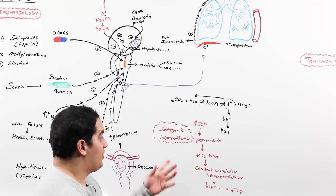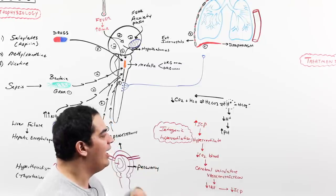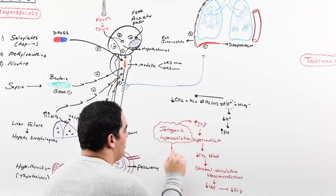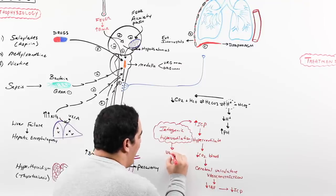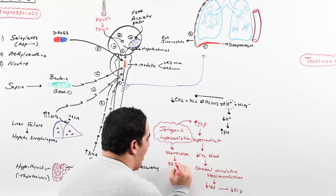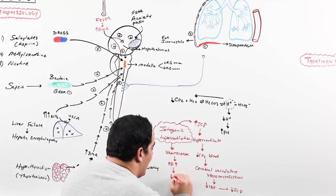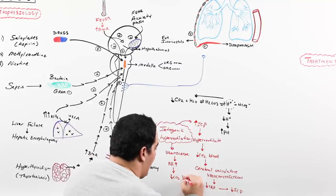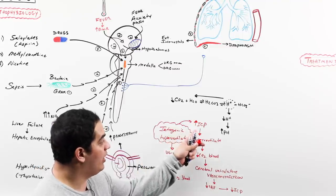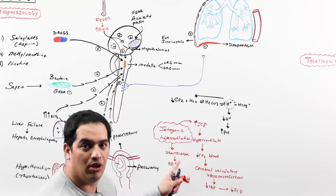Another cause of iatrogenic hyperventilation is having someone on a ventilator with incorrect settings — the respiratory rate is set too high, having them breathe too fast and blowing off too much CO2, dropping CO2 levels in the blood and causing respiratory alkalosis. So there are two ways to iatrogenically hyperventilate: one as an intentional ICP intervention, and the other by improperly setting the ventilator too fast and blowing off their CO2.